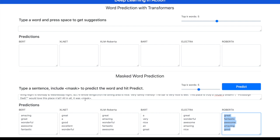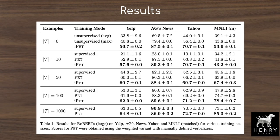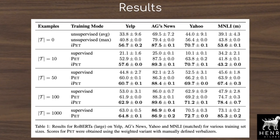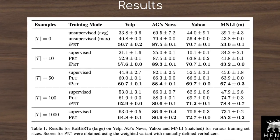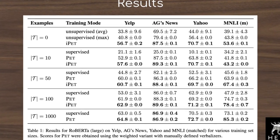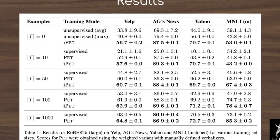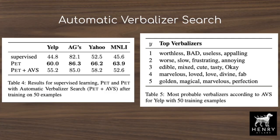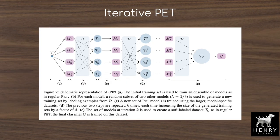We'll also get into the experimental results in the paper, such as different semi-supervised learning settings of 0, 10, 50, 100, and 1,000 labels. This video will also describe the details of the paper and techniques to utilize multiple patterns, like weighting the label predictions and the iterative PET extension.